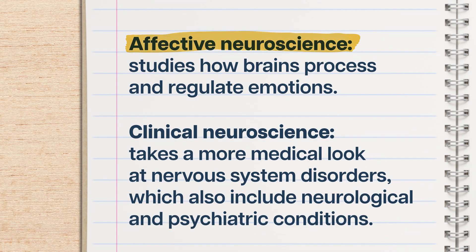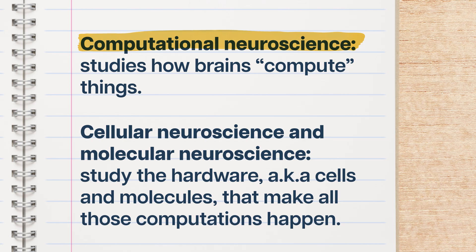Like affective neuroscience, which studies how brains process and regulate emotions. And clinical neuroscience, which takes a more medical look at nervous system disorders, which also include neurological and psychiatric conditions. Computational neuroscience studies how brains compute things, maybe not so unlike the computer code that runs your sims. And cellular neuroscience and molecular neuroscience study the hardware, the cells, the molecules that make all of those computations happen.